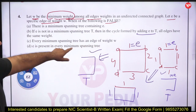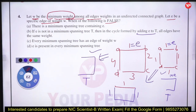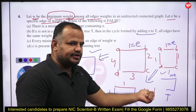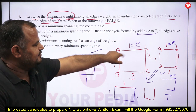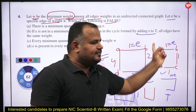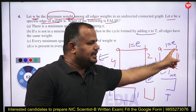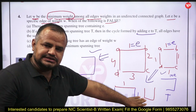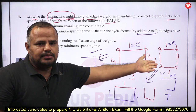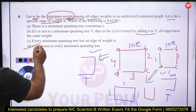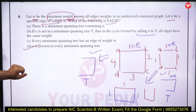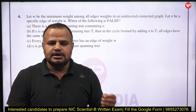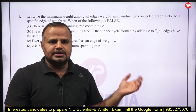Option D: E is present in every minimum spanning tree — this is false. Because if there is a repetition of minimum weight edges, E (a specific edge) may not be in every spanning tree. That is why D is the false statement and the correct answer.